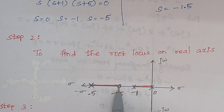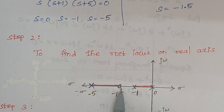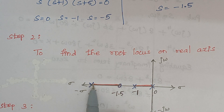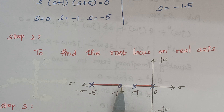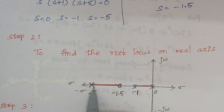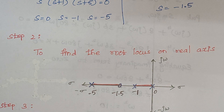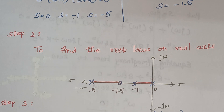Next, consider the zero at -1.5 as a test point. To its right we have two poles, which is an even number, so root locus does not exist between that pole and that zero. Then consider the pole at -5 as a test point. To its right there are totally three — two poles and one zero — which is an odd number. Therefore root locus exists between that zero and that pole. The rule: count poles and zeros to the right; odd count means root locus exists, even count means it does not.